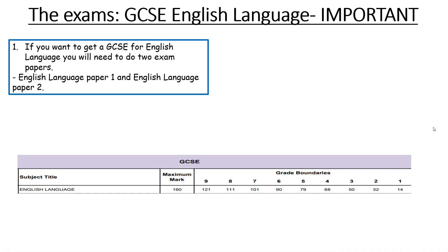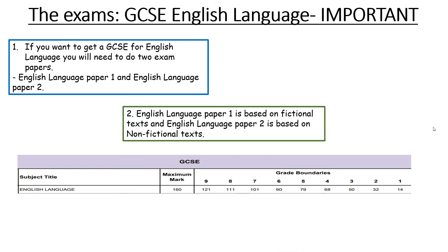If you want to get a GCSE for English Language, you need to understand that there are two exam papers that you must do: number one, English Language Paper 1, and number two, English Language Paper 2. English Language Paper 1 is based on fictional texts, whereas English Language Paper 2 is based on non-fictional texts, and you need to start compartmentalising this in your brain.